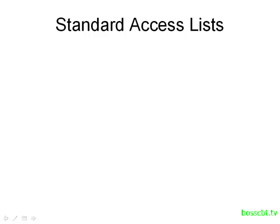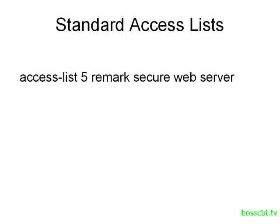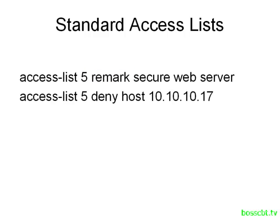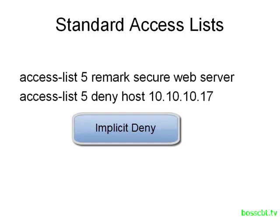The first line of the access list will be: 'access-list 5 remark secure web server'. The remark parameter allows us to put a description into a line of the access list. This line is not used to match any traffic — it's there so that when we look at the configuration later, we can easily understand what this access list was created for. Then the real substance: 'access-list 5 deny host 10.10.10.17'. If we were to stop here, we would end up denying everybody access.